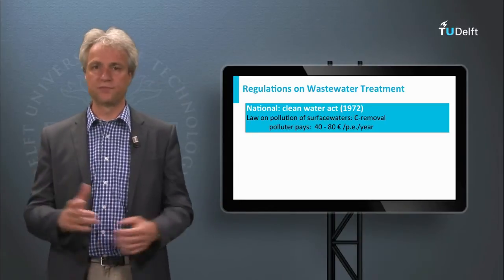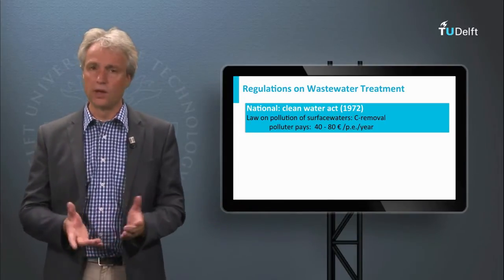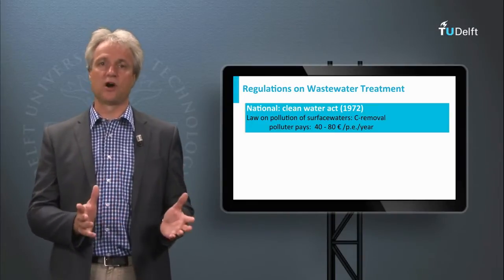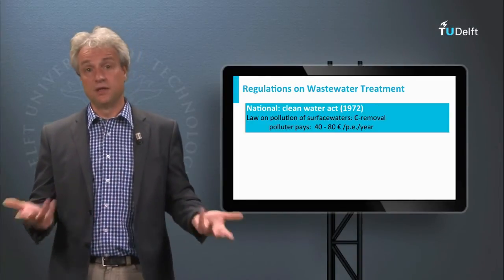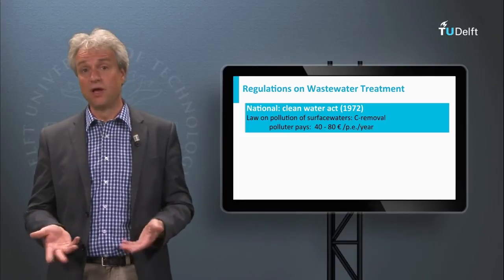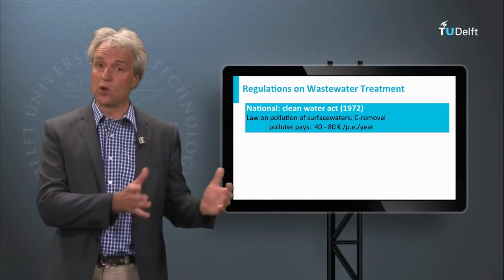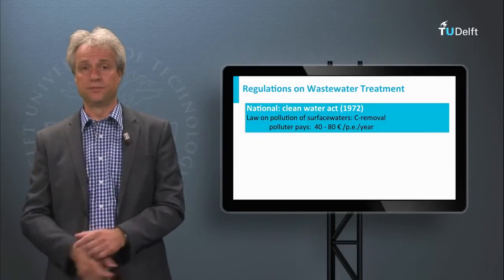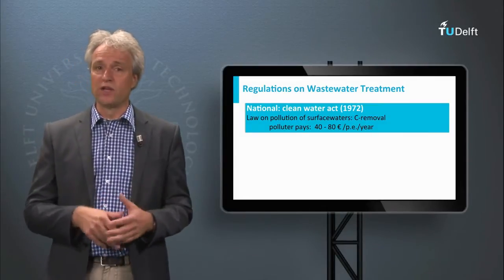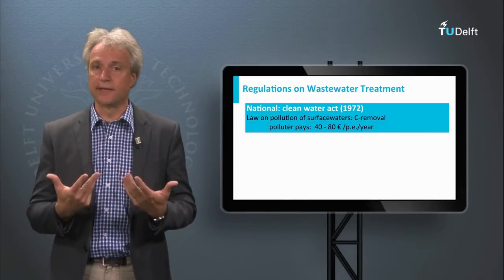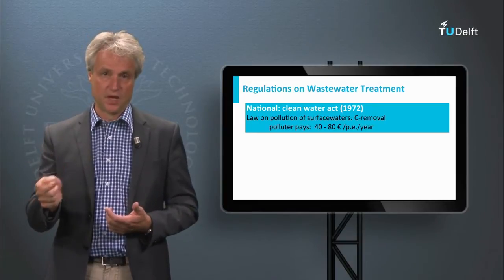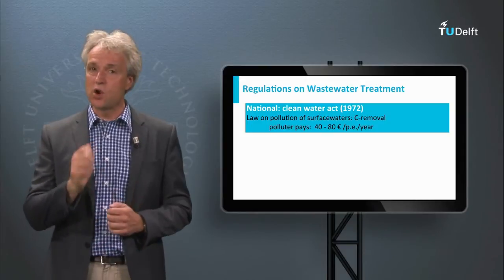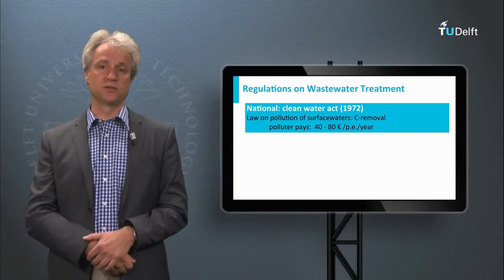And what does the polluter pay principle mean? Every person daily discharges a certain amount of carbon and nutrients. This amount of pollutants is therefore denominated as person equivalent, abbreviated by PE. The person equivalent of pollutants is subsequently translated into money. Consequently, every person receives a bill for the cost required to treat these pollutants.